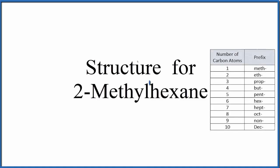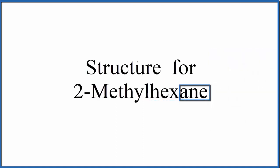So we know when we see hexane, hex, that means 6. So we'll have 6 carbons in A-N-E. That means there'll be an alkane. It'll be all single bonds.